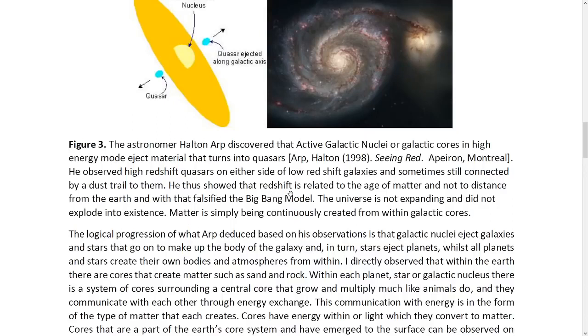He observed high redshift quasars. So these are actually proto galaxies. On either side of low redshift galaxies. So this would be a low redshift object. This would be high redshift object. And he observed them sometimes still connected by a dust trail to them. This is basically what we have here. Although this ejection was along the major axis in the plane of rotation of the galaxy, it's close to the end of that arm there, a daughter galaxy. He does show that redshift is related to the age of matter. The younger the matter, because it's been newly created, the higher the redshift, and not to distance from the Earth. And with that, he falsified the Big Bang model. So in other words, the universe is not expanding, and did not explode into existence as the Big Bang model says it did.